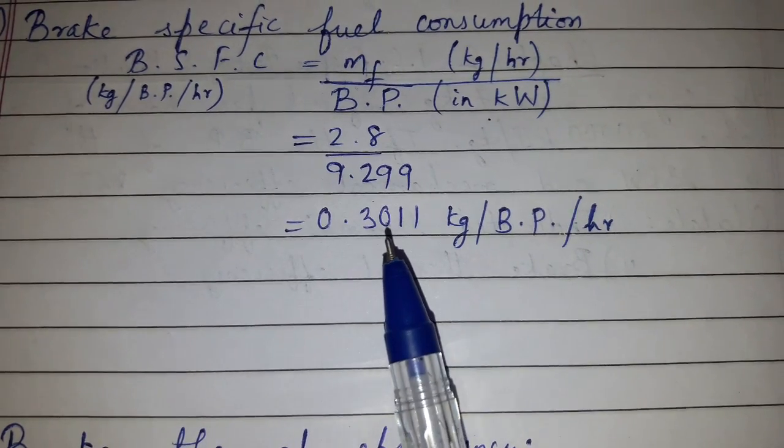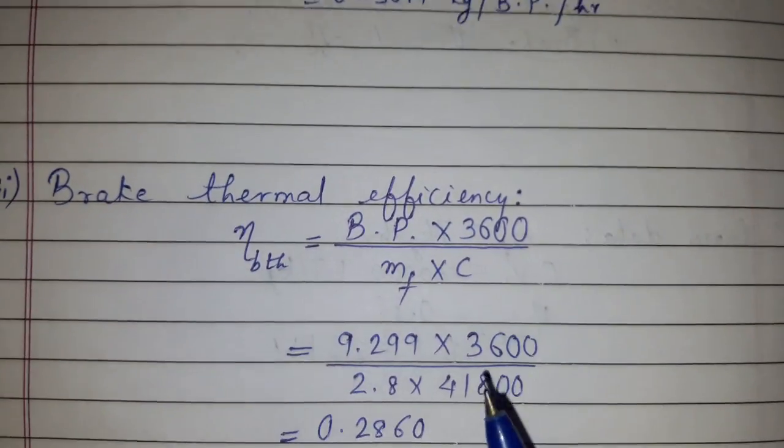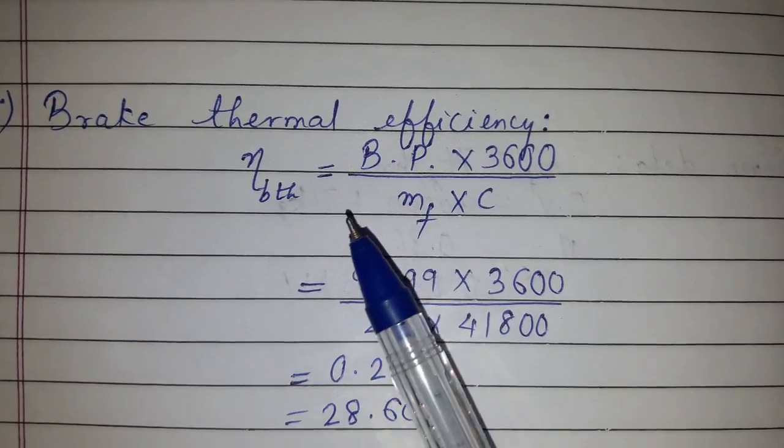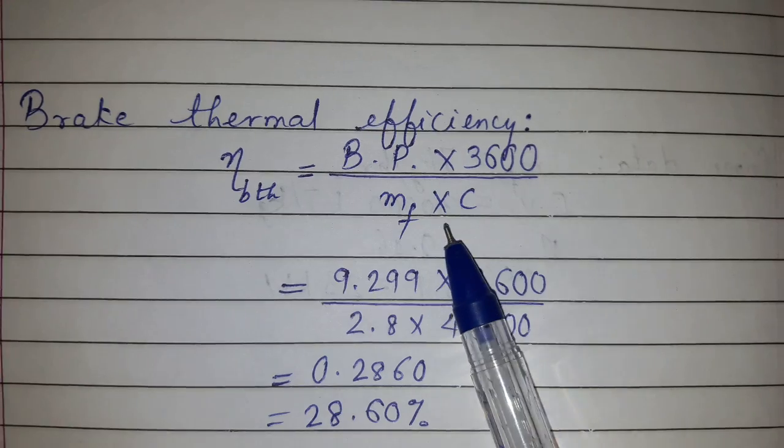Now the third thing which we need to find is brake thermal efficiency. The formula is BP × 3600 / (MF × C).